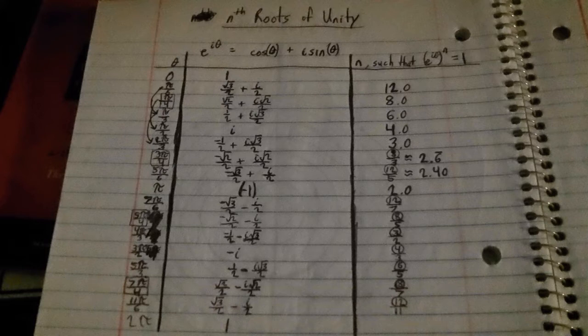And so in this final column I have a number, n for instance, meaning the number such that e to the n i theta equals 1. Really it's the exponent indicating which root of 1 is expressed by this central number. So I've noted that, particularly in this particular table, it is even numbers which we're seeing most often. 12, 8, 6, 4 is how it starts. And then 3. And then we get into these fractional values.